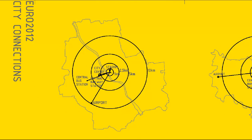City connections from strategic points like the city center, airport, central railway station, and central bus station show directions from where participants mostly come. This is the point where the structure is highest, to make it visible from far.